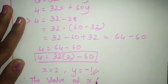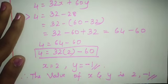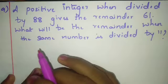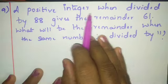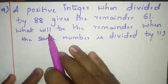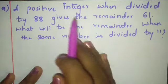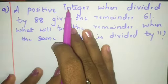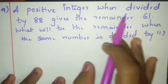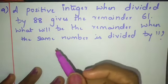Therefore x and y equal 2 and −1 respectively. Next sum: a positive integer when divided by 88 gives remainder 61. What will be the remainder when the same number is divided by 11?